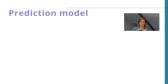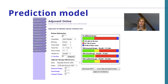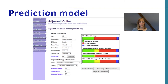Let's take a look at an example. Adjuvant Online was a model that was available until a few years ago — unfortunately it's no longer available. It was a model used for patients with breast cancer who were already surgically treated, so the tumor was removed. It was used to make the decision whether additional chemotherapy was necessary. As you can see on the left side, some predictors were entered — for example, age, but also some tumor characteristics.